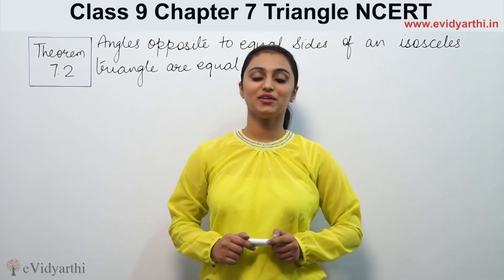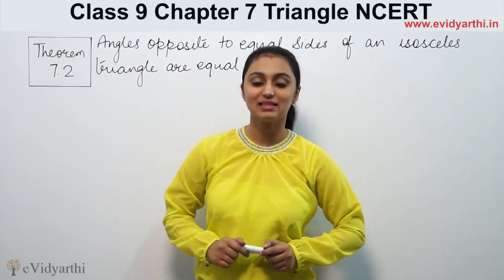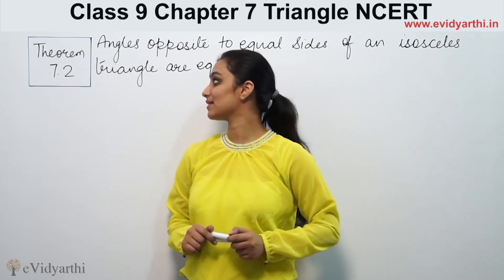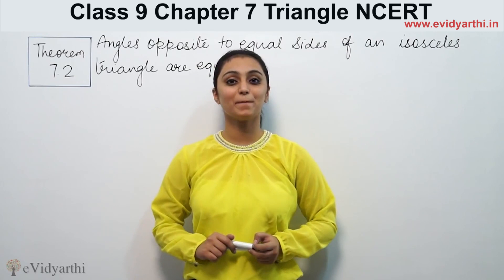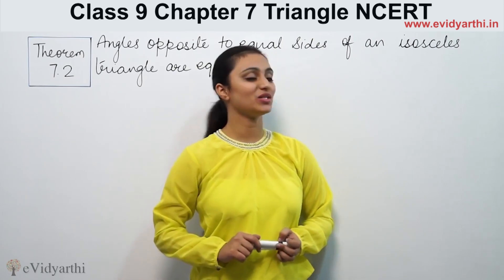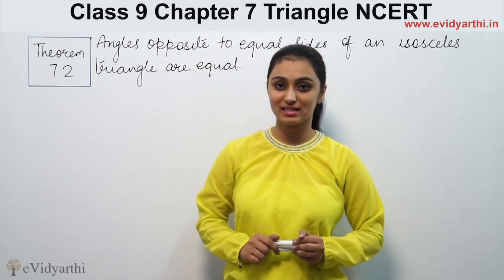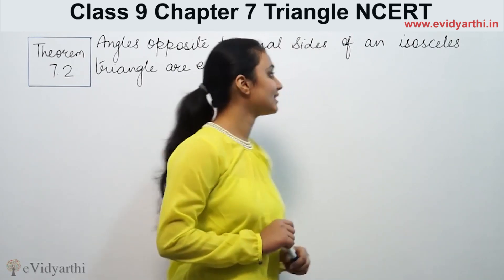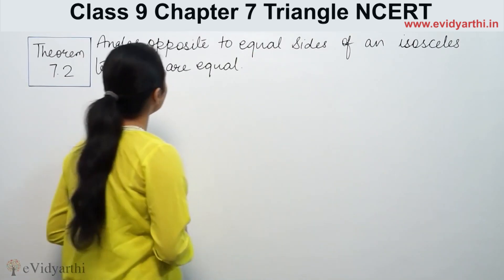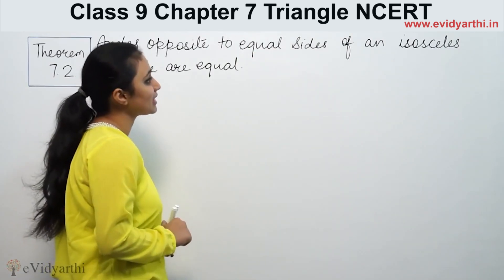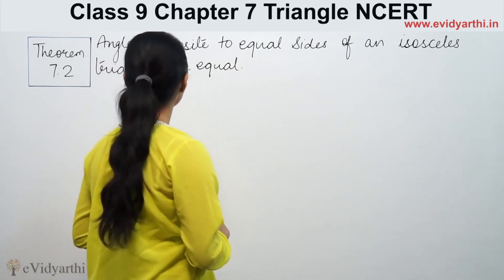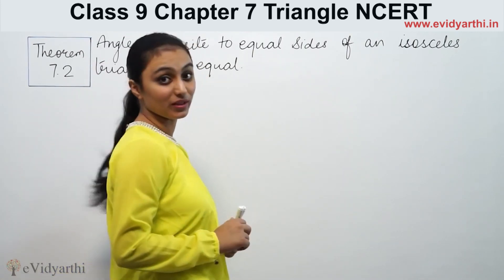Hi, this is Kushku with another theorem from NCERT. This is theorem number 7.2 from page number 121 of NCERT. It says: angles opposite to equal sides of an isosceles triangle are equal.